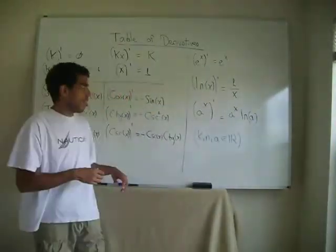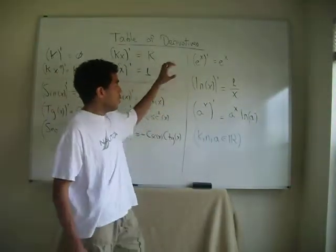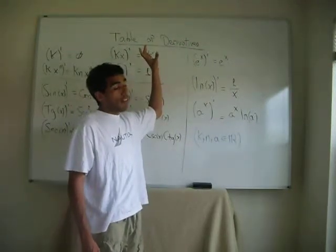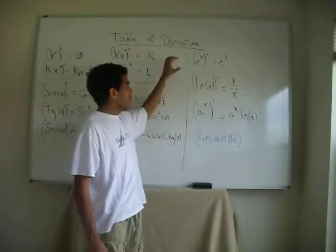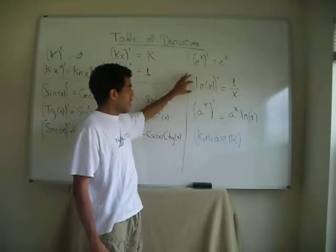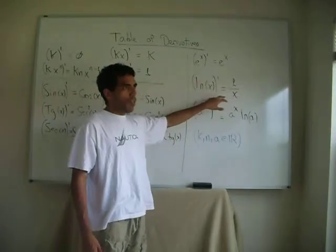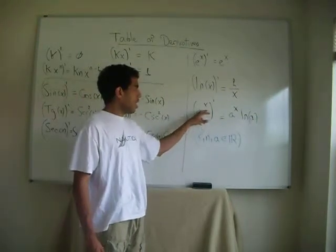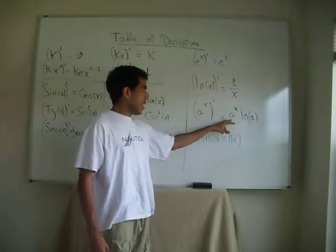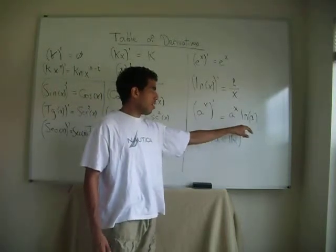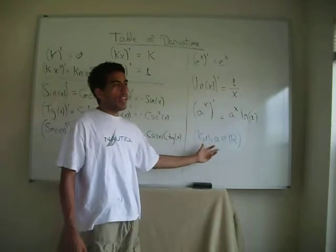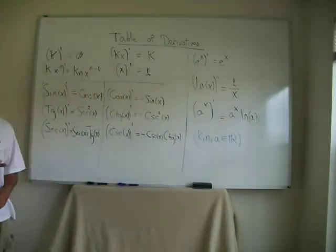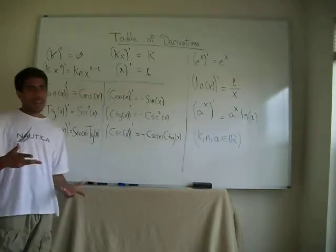And then finally we have the exponential and logarithmic functions. Derivative of e to the x is e to the x. It's the only function in math whose derivative is itself. Logarithmic derivative is 1 over x, the inverse function. And then of course the general exponential function. a to the x derivative is going to be a to the x times logarithm of a. As I said, k and n and a are real numbers. It doesn't matter what they are. It can be pi, it can be 2, negative 3, negative 10, it can be anything.